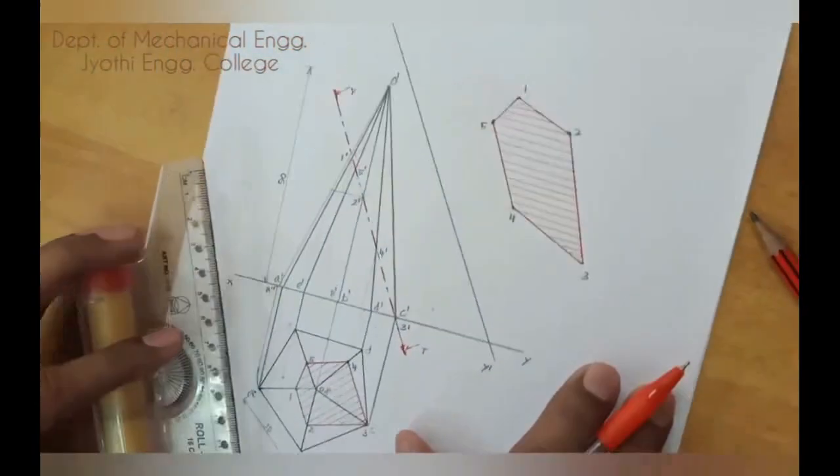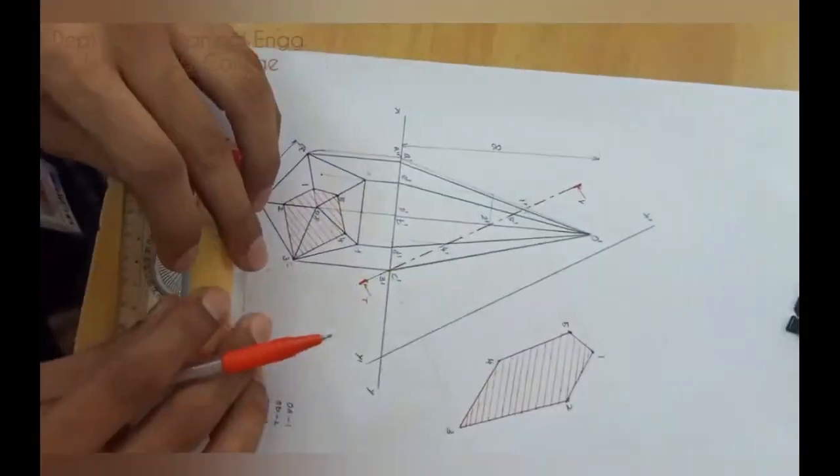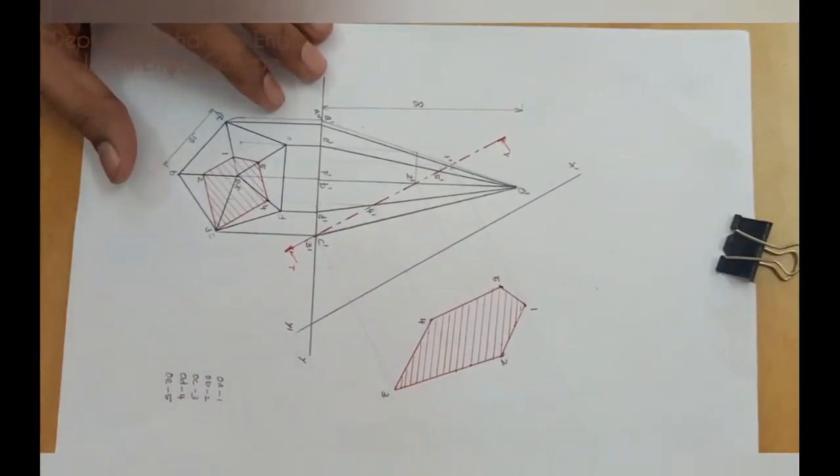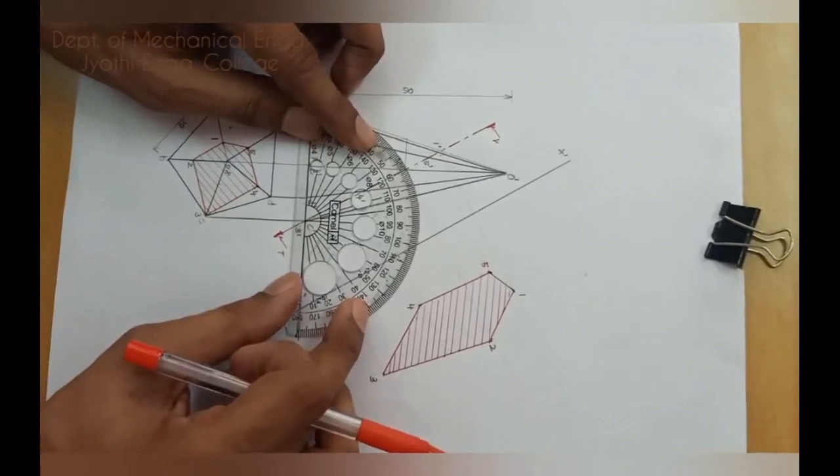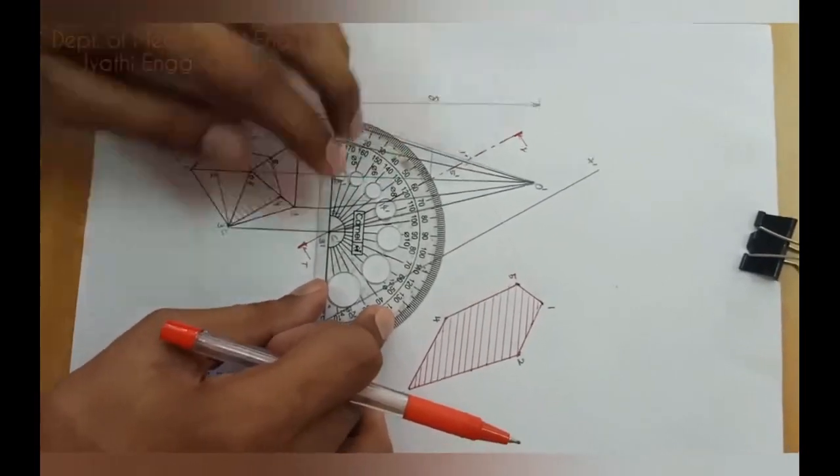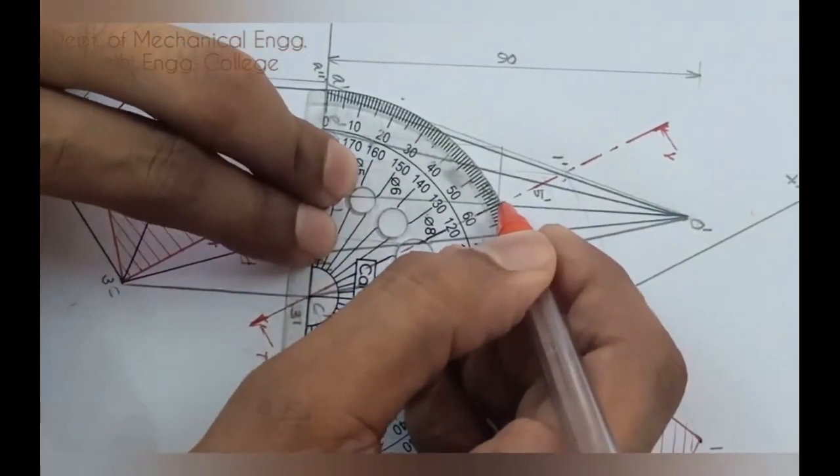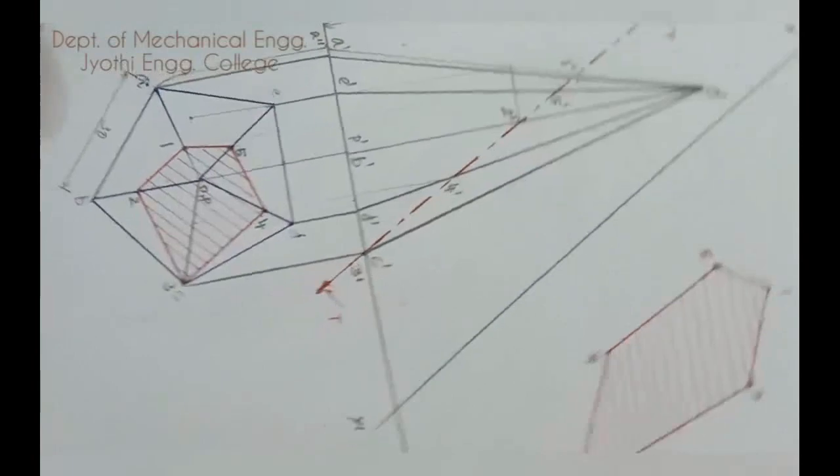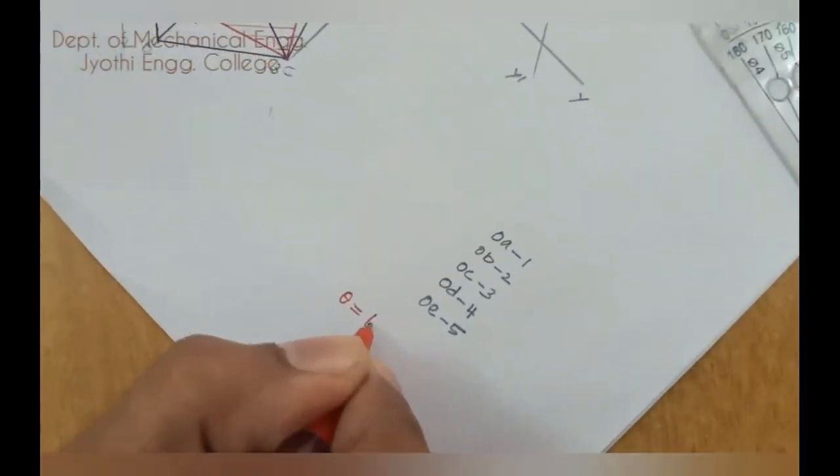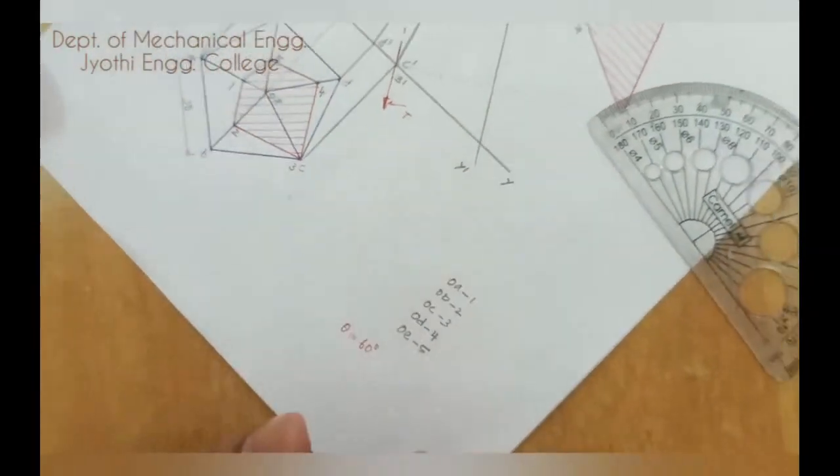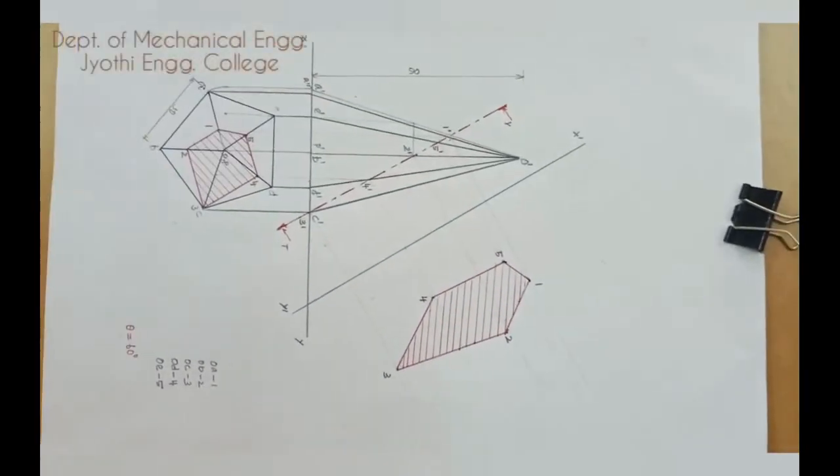This is the final figure. Now in the question, they asked to find the inclination of the section plane with the XY line. Using the protractor, we can measure the inclination. You can see this, with XY line it makes an angle of 60 degree. So, you can write final answer as theta is equal to 60 degree. So, this is the final solution of the given problem.